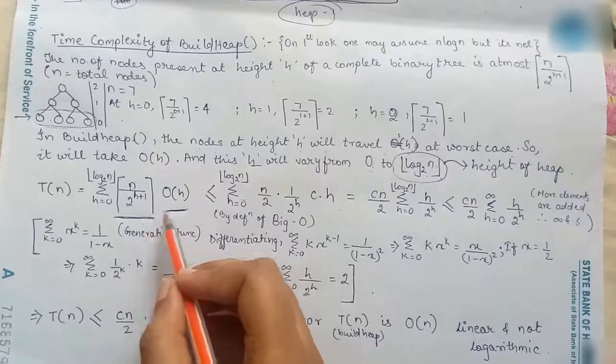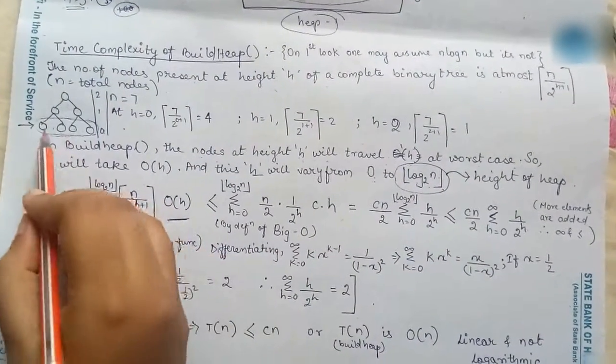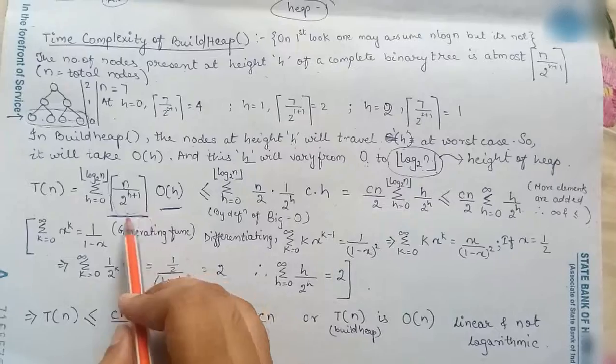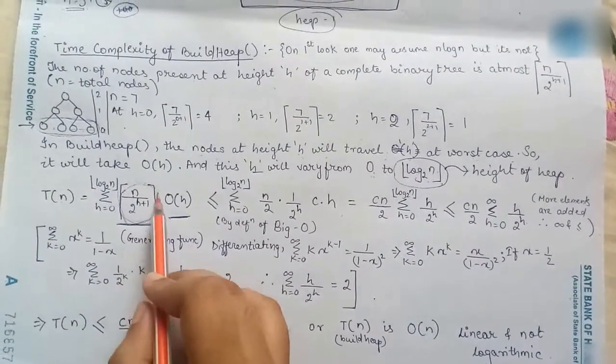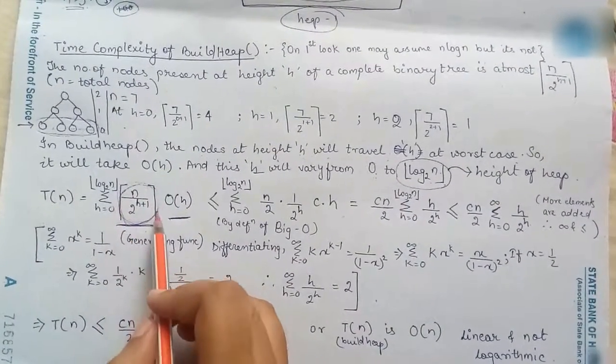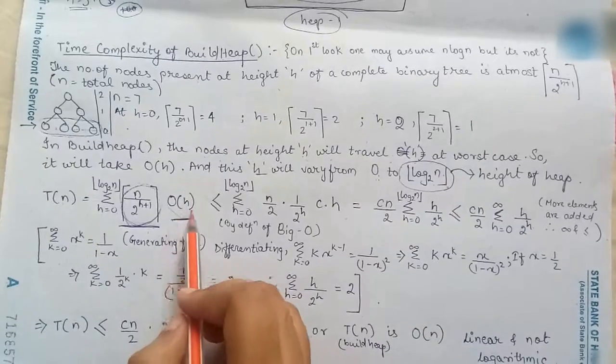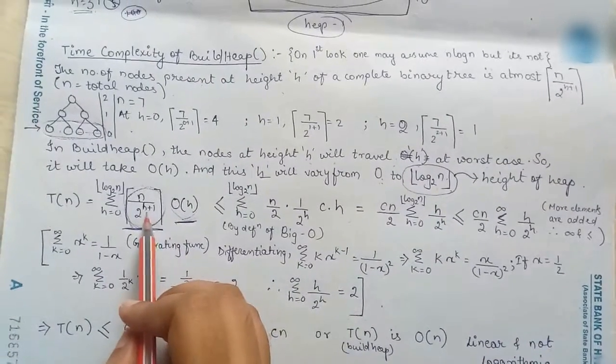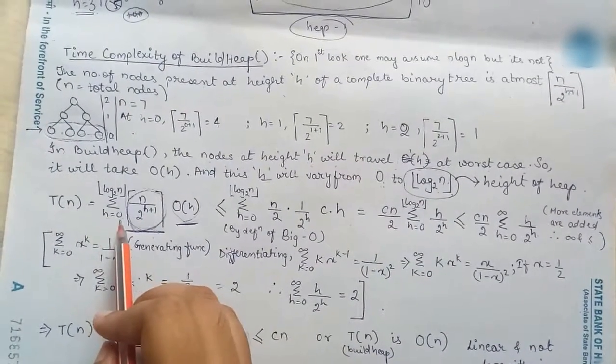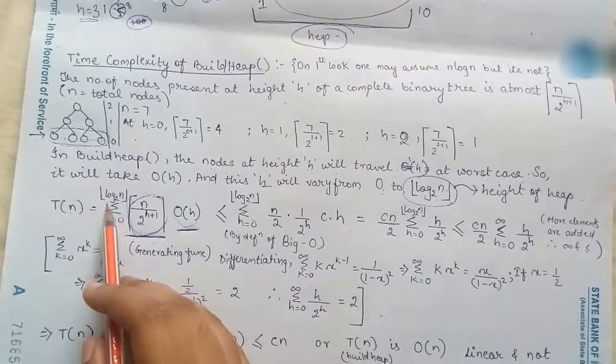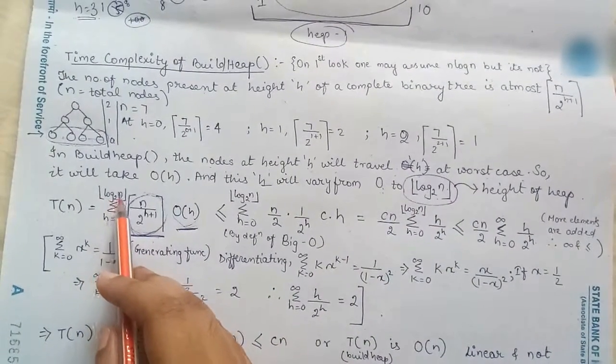So here we have told this thing is the number of nodes. So at height h we have this much number of nodes that travel this much of distance where h is variable and it varies from height 0 till the maximum height is log n base 2.